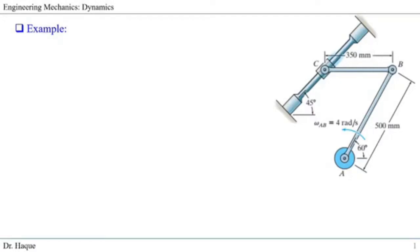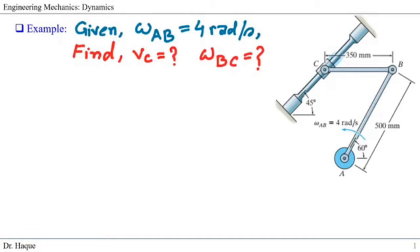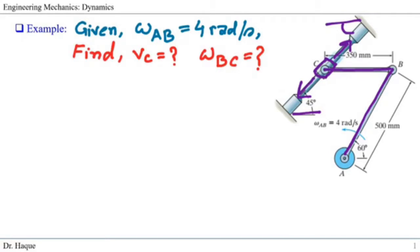Today we will solve a relative motion analysis problem. Our problem has two links: link A to B, which is joined by a pin connection to link CB. The end of link C is connected to a collar that can slide upward or downward on a shaft making a 45-degree angle with the horizontal, so this angle is also 45 degrees.